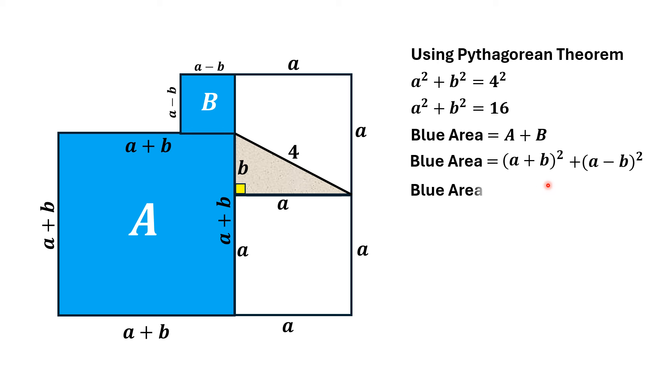Expanding the binomials on the right, we have A plus B squared equals A squared plus B squared plus 2AB, and A minus B squared equals A squared plus B squared minus 2AB. So, plus 2AB and minus 2AB will cancel out, and we have blue area equals 2A squared plus 2B squared.